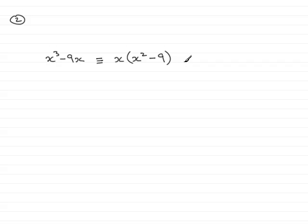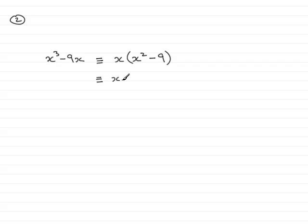Now, I said completely, and as I said before, that was a clue that this was going to go again. We have two factors here, and the first factor is x, and the second factor is x squared minus 9. This second factor is what we call the difference of two squares. This is the square of x, and this is the square of 3. It factorizes again, and that would break down to two linear factors.